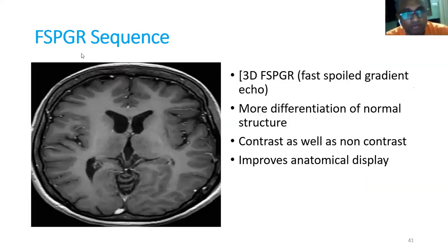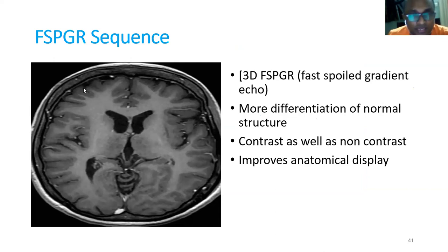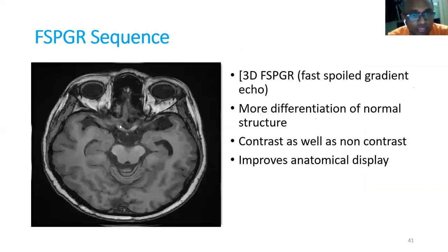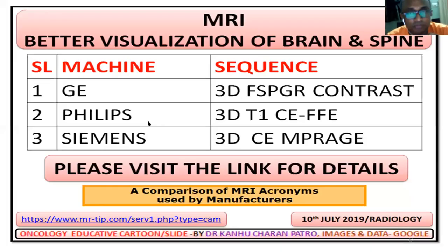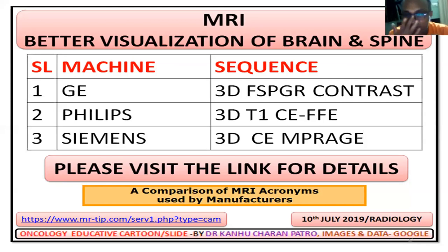The FSPGR sequence, also called 3D FSPGR or fast spoiled gradient echo, provides better differentiation of normal structures. With contrast and non-contrast it improves anatomical display. Importantly, you cannot see the optic chiasm in standard T1 or T2, but in FSPGR sequence you can clearly see the optic chiasm and cranial nerves. Note that the name differs by company: in GE it is FSPGR, but in Philips it is called T1 CE FFE sequence.